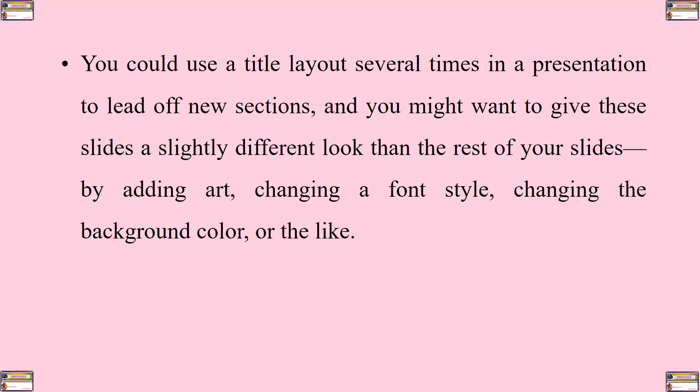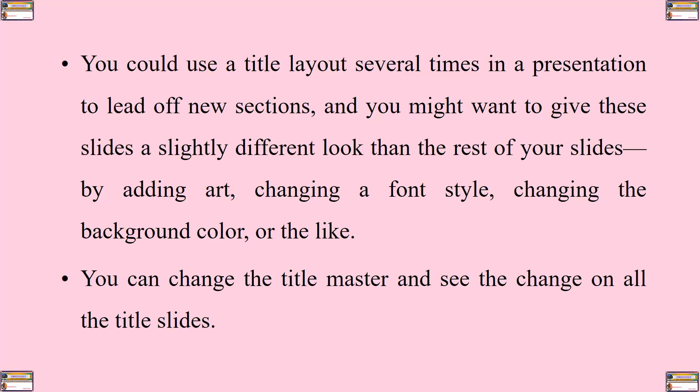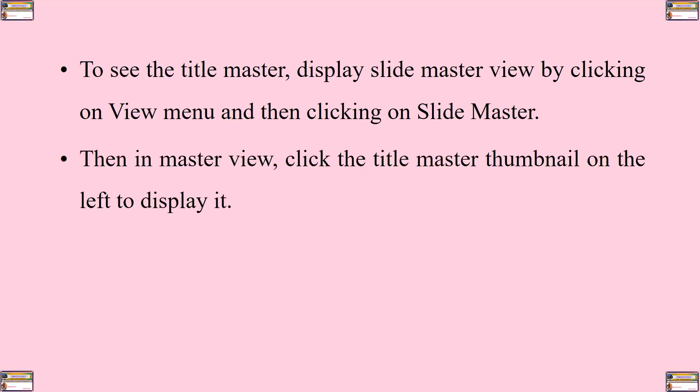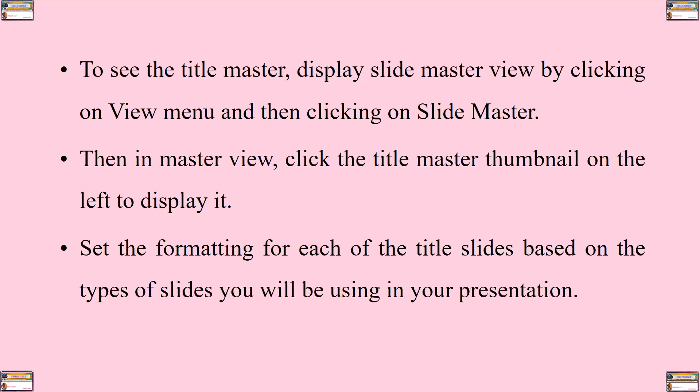You could use a title layout several times in a presentation to lead off new sections, and you might want to give these slides a slightly different look than the rest of your slides by adding art, changing a font style, changing the background color, or the like. You can change the title master and see the change on all the title slides. To see the title master, you display slide master view by clicking on the view menu and then clicking on slide master, then clicking the title master thumbnail on the left.